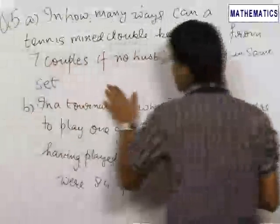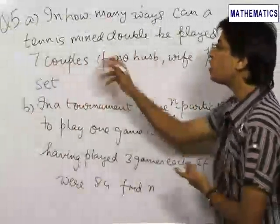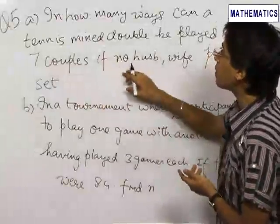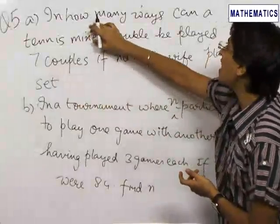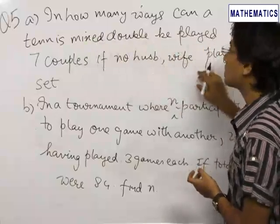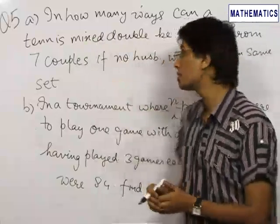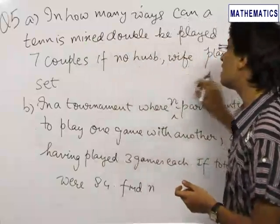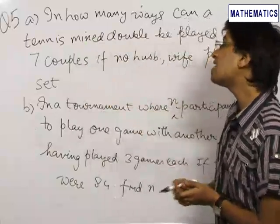The next problem which we have is also a very interesting problem. There are two parts. Let us see the first part first. In the first part we are asked in how many ways can a tennis mixed double match be played out of seven couples, that is seven husbands and seven wives, if no husband wife can play in the same set.